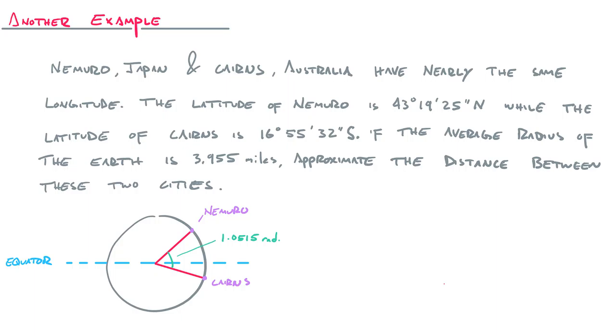So finally, we have everything that we need to find S. We've got a radius, 3,955 miles, and we're trying to find this arc length. So we have R times theta. R is 3,955. Theta, the central angle here that we found in radians was 1.0515. So we multiply those things together to get about the distance on the surface of the earth between Nemuro and Cairns is 4,159 miles. I think I rounded up. I think it was like 4,158.7 some stuff miles.